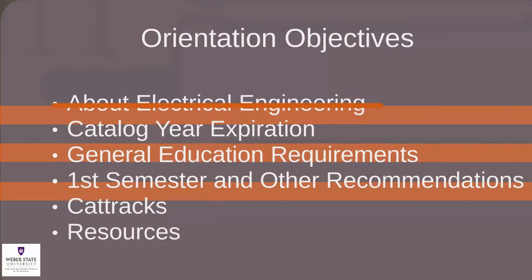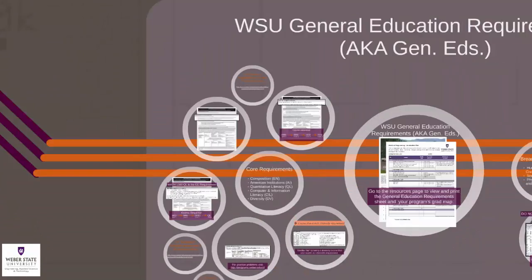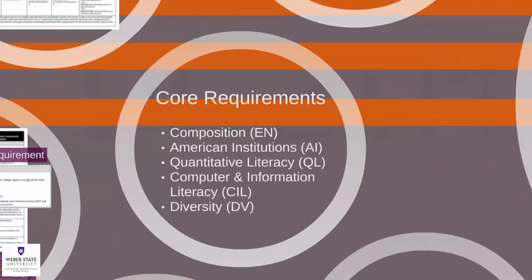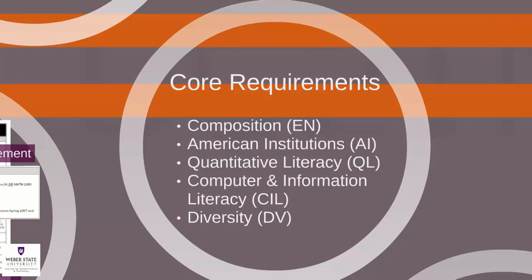In order to follow along with this presentation, print the general education brochure from the resources page if you have not already done so. General education is broken up into two parts: the core requirements and the breadth requirements. We will begin by discussing the core requirements.